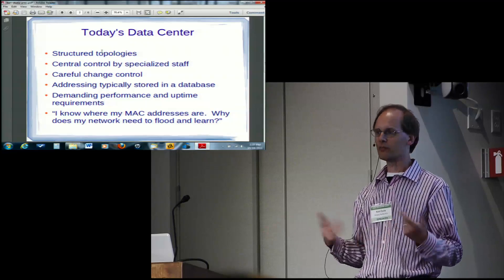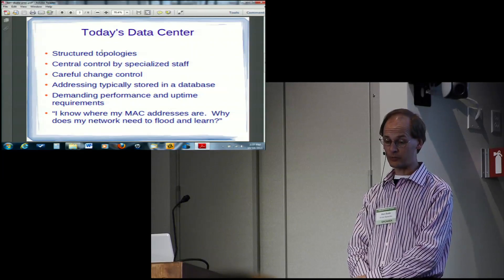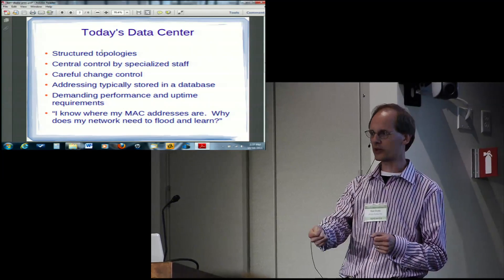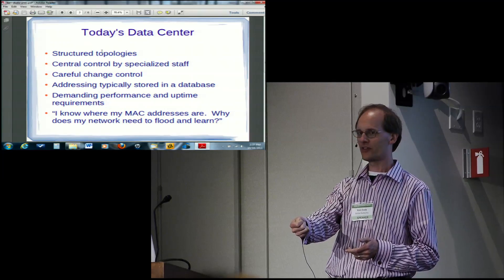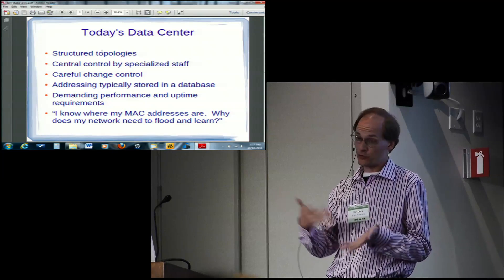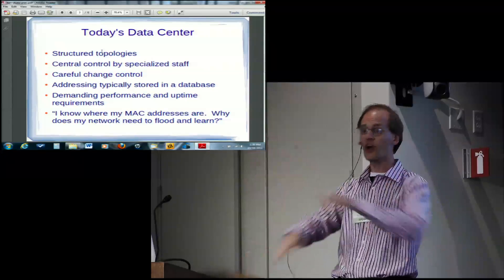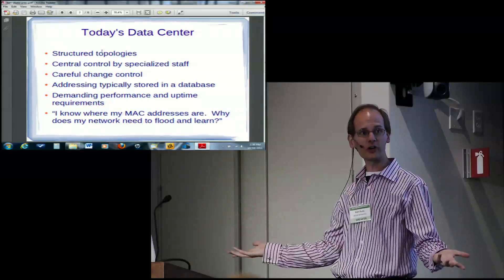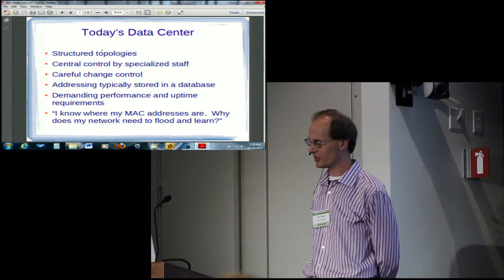This whole question of like MAC learning, I had a customer come to me feeling very burned by a problem in their network where a particular server had decided that it would answer ARP requests with one MAC address, but then sources traffic with a different MAC address. And so the network never learned where the first address was, yet all the other servers were sending to it using that address. All this traffic's flooding the entire network. And he says to me, I know where my MAC addresses are. Why does my network need to learn them?